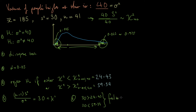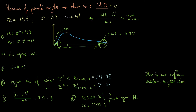Therefore, we fail to reject the null hypothesis H0. In words, there is not sufficient evidence to reject this person's claim. We're not saying the precise value of 40 is necessarily true — we're simply saying we don't have enough evidence to reject their claim that the true population variance of people's heights is 40.